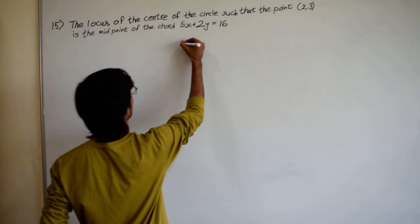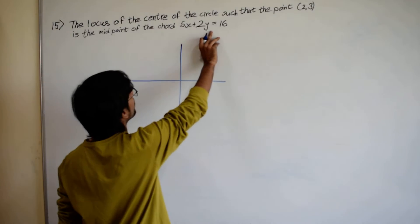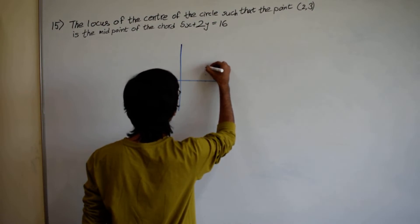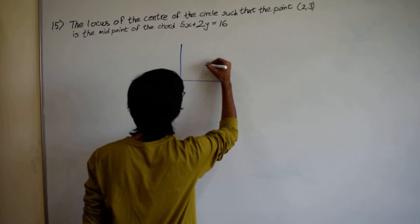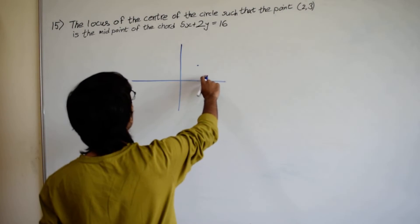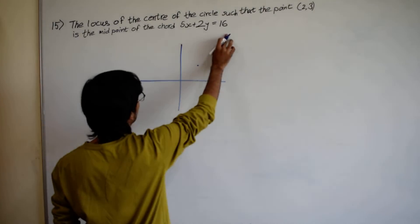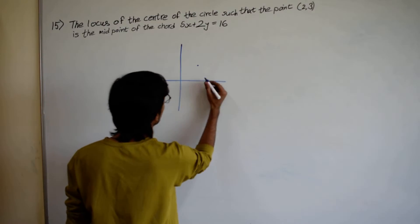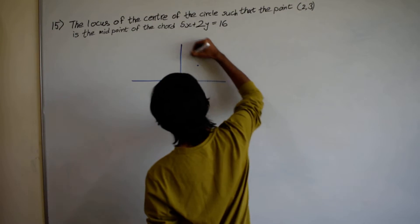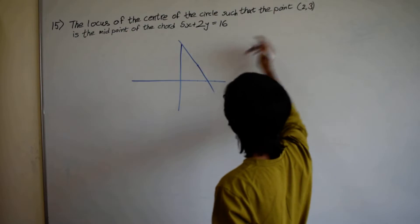First, let us draw a graph. We plot the line 5x plus 2y equals 16. Setting y equals 0 gives x equals 16 by 5, which is around 3.2, and setting x equals 0 gives y equals 8. The point (2, 3) is also marked on the graph.